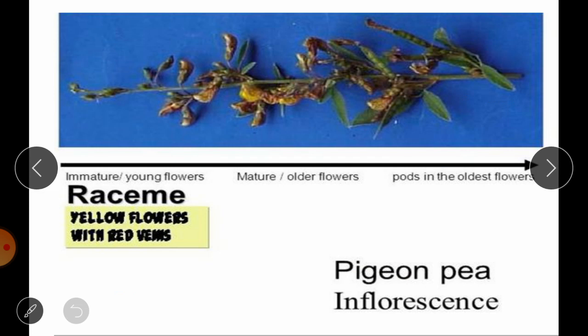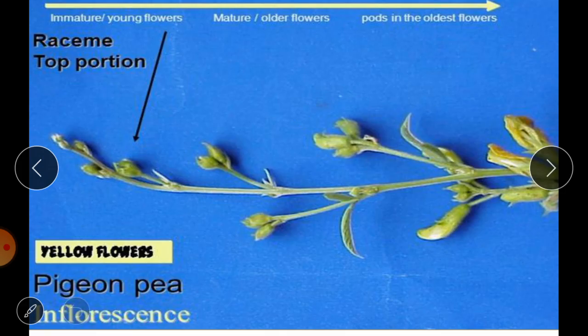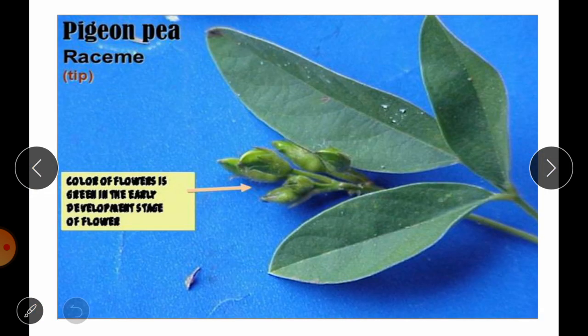In this picture you can see the inflorescence of pigeon pea. The oldest flowers are present at the bottom, immature flowers are at the top — so it is a racemose type with indeterminate flowering. In another picture you can see a raceme with yellow-coloured petals, with immature or young flowers at the top, mature or older flowers in the middle, while pods are developed at the end. The colour of flower is green in the early development stage.